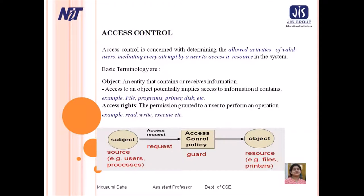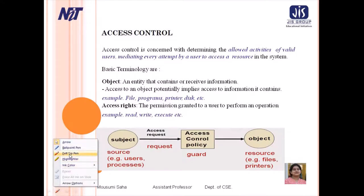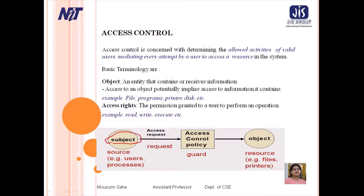Access rights are permissions granted to a user to perform any operation. As discussed in previous lectures, file permissions include read, write, and execute. A subject — for example a source code file or user process — will request access. The access control policy will check and guard that request. After that, the source file will be converted into an object file.